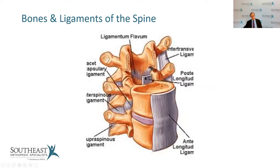Here is the anterior longitudinal ligament in front of the vertebrae, the posterior longitudinal ligament, and the ligamentum flavum. This is an area where we pass the needle through the epidural space, where the spinal cord fits right down into this canal.